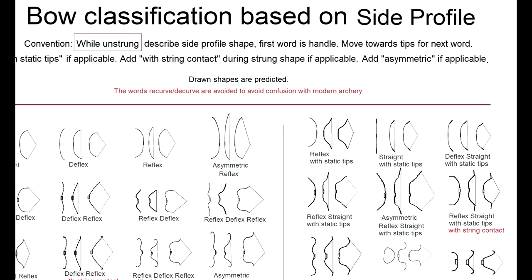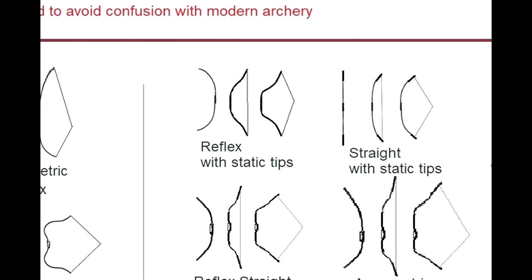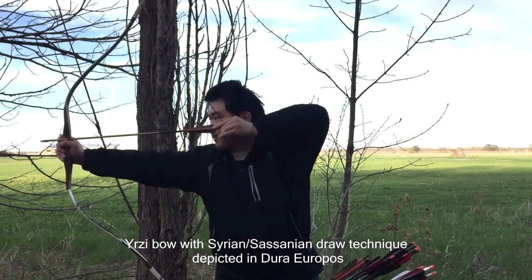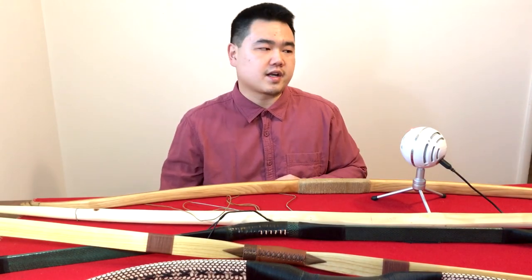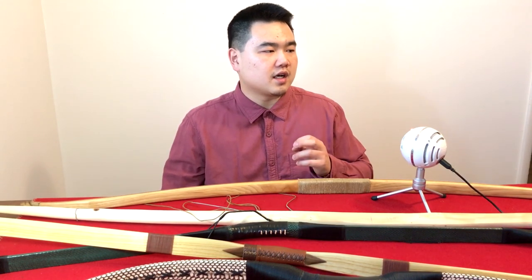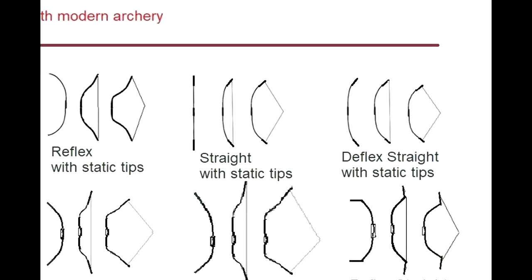On the right side of my diagram is the static tip family — all of these have static tips. The first is a reflex bow with static tips: the Yurtsey bow, a Syrian style bow possibly used by Roman auxiliary archers. The tips are reinforced with bone, which bends very little, giving a static tip design. It's actually the first composite bow with static tips. The oldest example of static tips I can find is the Mola Gabit bow — basically a straight bow with static tips, or deflex-straight with static tips when set develops. These are the oldest static tip bows with archaeological evidence.